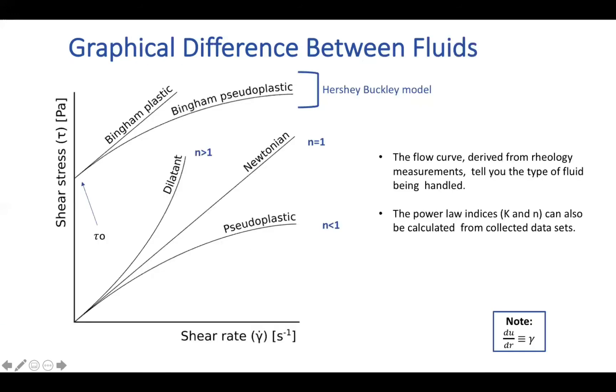When comparing the difference between fluids, it's easiest to use a graphical representation of the shear stress for a shear rate of each fluid type, which can also be referred to as a rheology profile. As we can see, this relationship is linear for Newtonian fluids, with the N value equal to one.